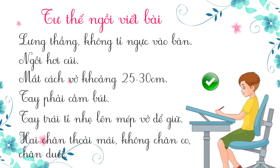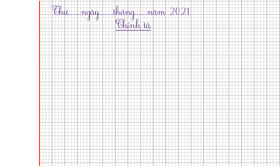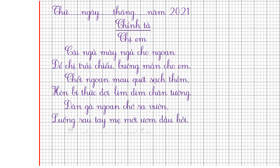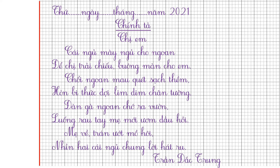Bây giờ các em hãy chuẩn bị tập, bút và thước để viết bài. Các em lùi vào 1 ô, viết thứ ngày tháng; lùi vào 6 ô ghi 'Chính tả', nhớ gạch chân chữ 'chính tả'. Tiếp theo, lùi vào 6 ô ghi tựa bài 'Chị Em'. Để trình bày vở đẹp khi viết thơ lục bát: dòng thơ có 6 chữ ta lùi vào 2 ô, dòng thơ có 8 chữ ta lùi vào 1 ô, các câu thơ còn lại trình bày tương tự. Khi viết bài, các em nhớ viết cẩn thận, hạn chế gạch xóa để bài viết sạch đẹp hơn.